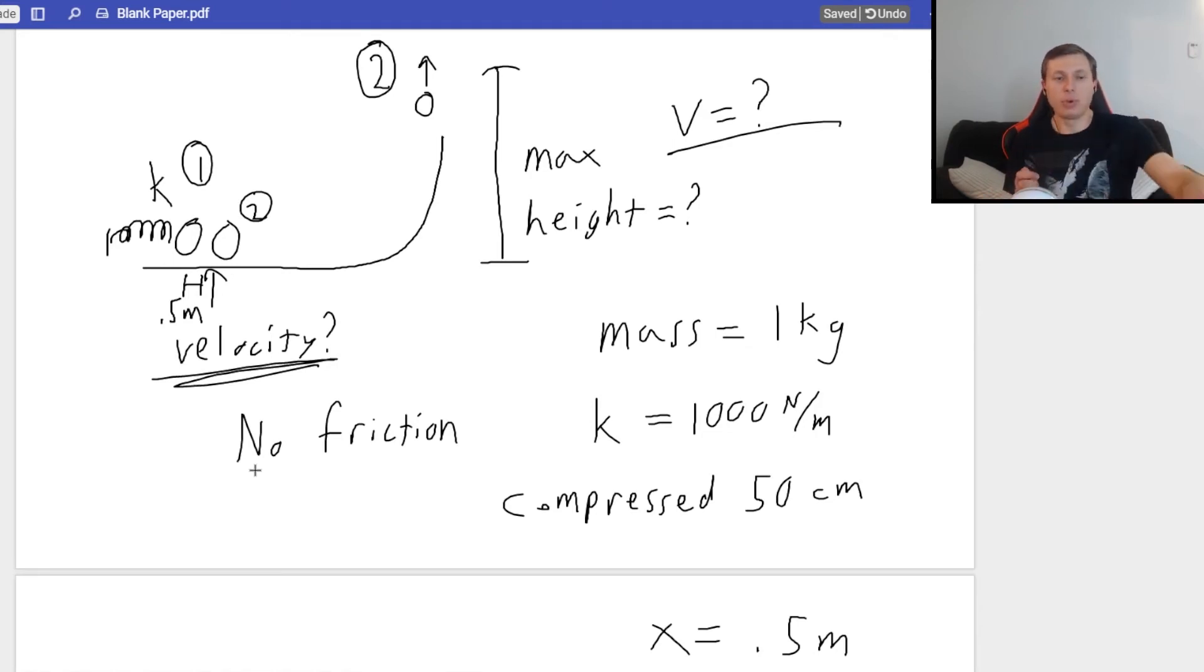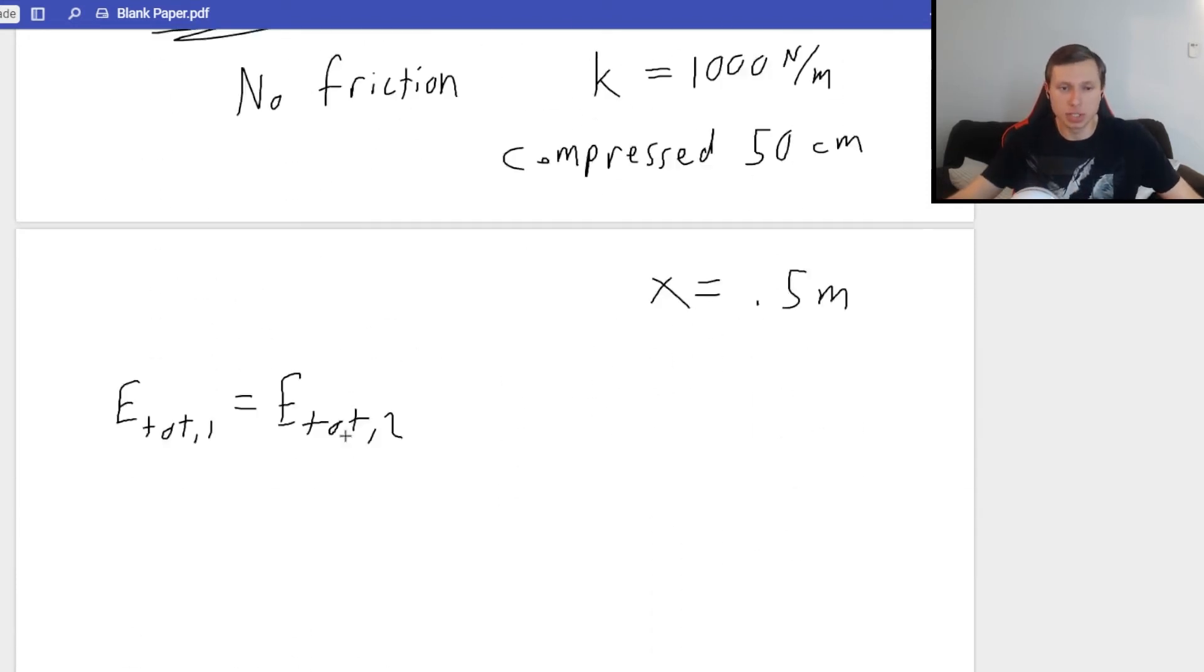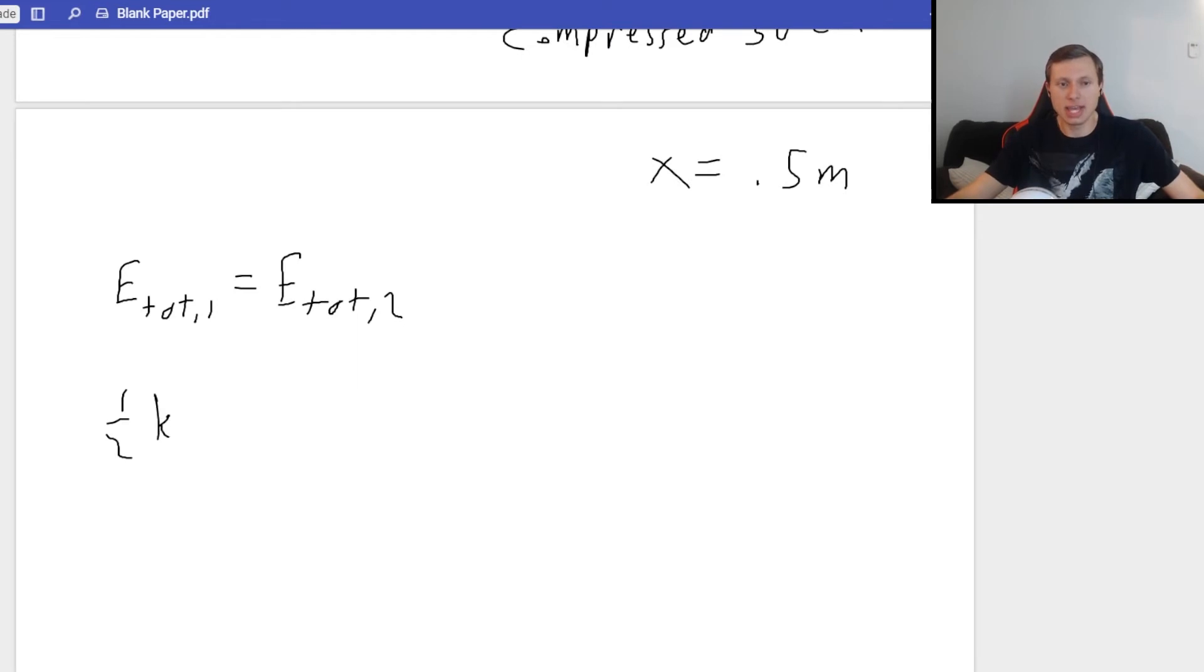So if this is point one, then I'm going to say right here is point two. This is after it's compressed point five meters. And now the other thing I want to say is, what's the equation we're going to use? The equation is going to be E total one equals E total two. And why? Because there's no friction. So now we need to figure out what kind of energy is at point one. This comes back to our question of there are three kinds of energy: gravitational potential, kinetic, and spring potential.